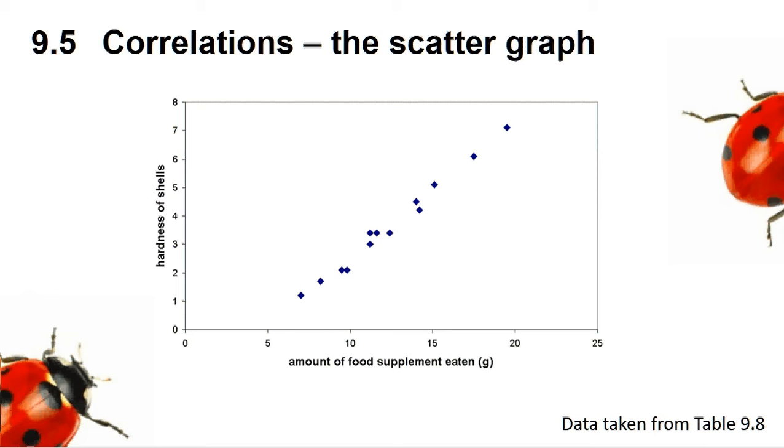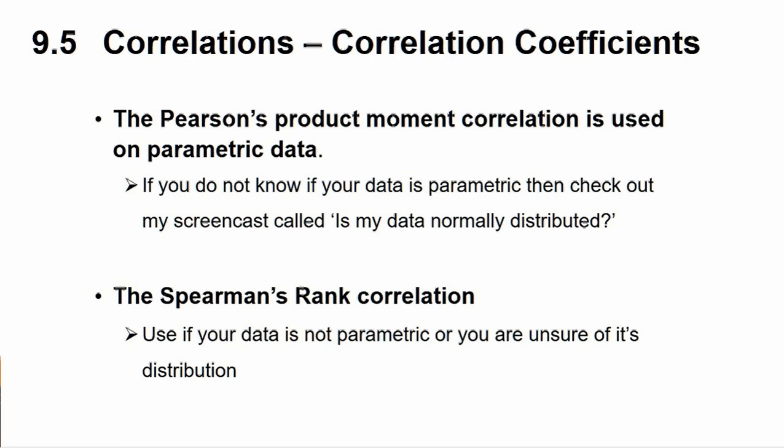This is where we can use the Spearman's Rank Correlation and the Pearson's Product Moment Correlation to give an indication whether the relationship you see is real. The Pearson's Product Moment test is used on parametric data. If you do not know if your data is parametric, then check out my screencast called Is My Data Normally Distributed?